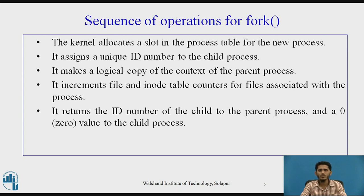Now let us see the sequence of operations for the fork system call. The kernel allocates a slot in the process table for the new process, then assigns a unique ID number to the child process, and makes a logical copy of the context of the parent process. Then it increments the file and inode table counters for the files associated with the process. It then returns the ID number of the child to the parent process and a 0 value to the child process.